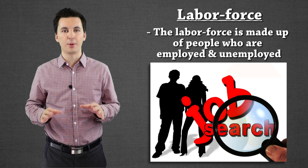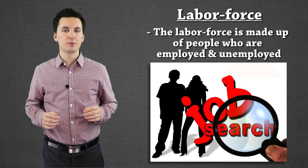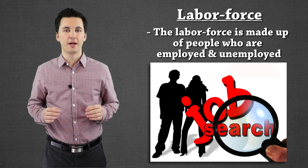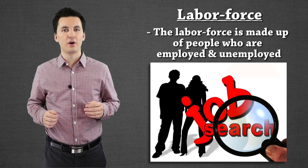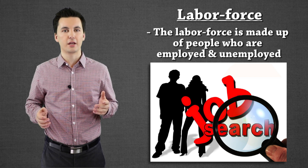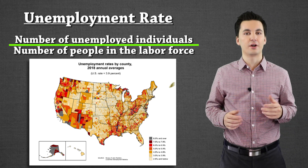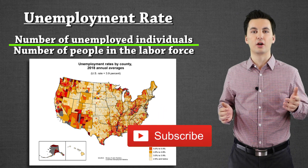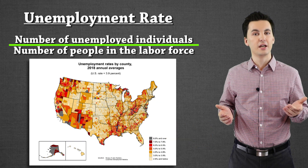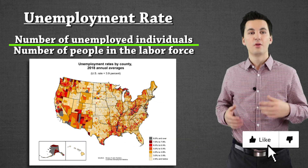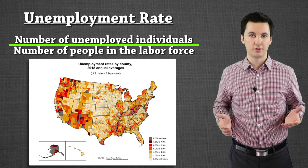Even though it might seem weird that unemployed people are considered part of the total labor force, they're still participating — they're still trying to get a job. These aren't people who have given up and decided not to work anymore. We need to understand how to find our total labor force in order to find our unemployment rate. The formula: take the total number of people unemployed and divide it by our total labor force.